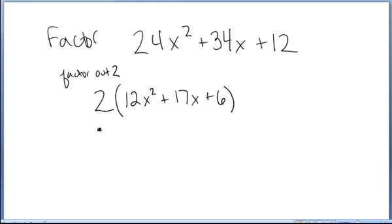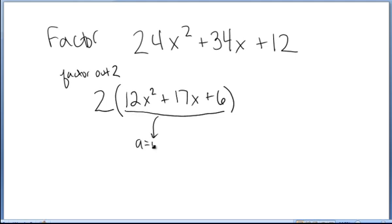So now we have a 2 out front. We have to remember every time we're rewriting this, we'll have to have that 2 multiplied out front. The next step, I'm going to factor this trinomial. Notice here that a equals 12, b equals 17, and c equals 6.